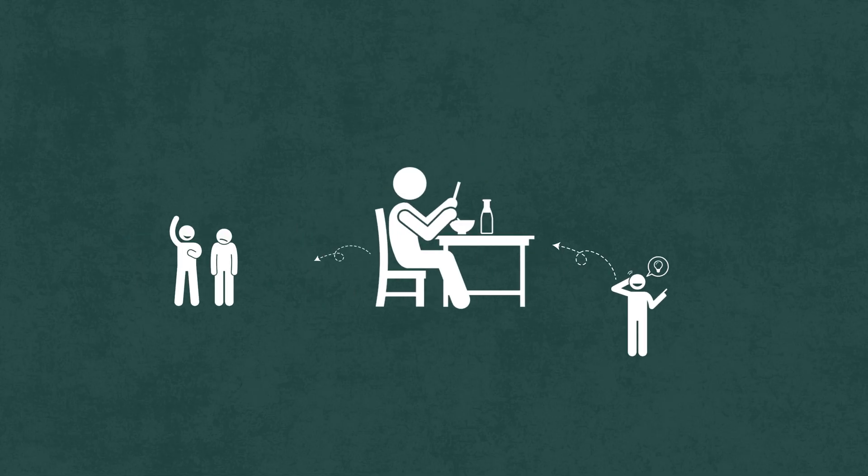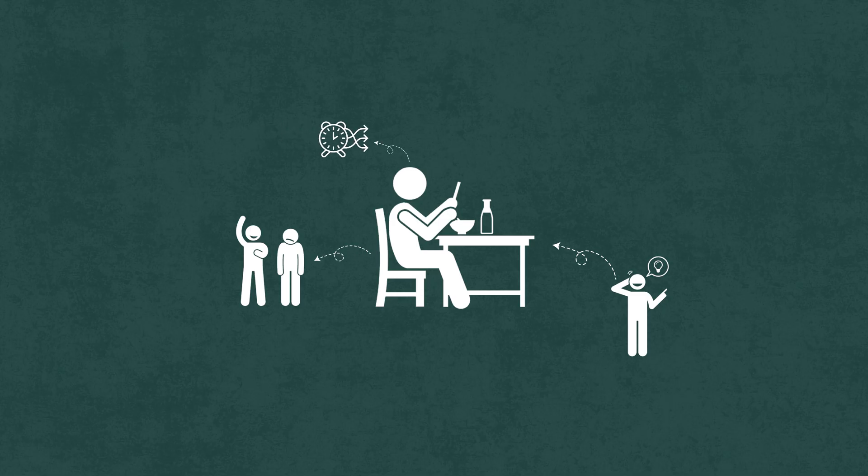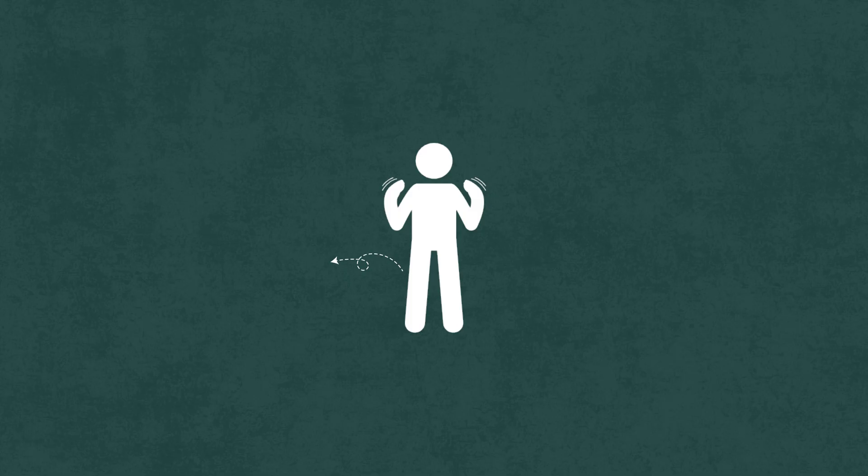Most people don't realize this, but your very first meal of the day decides how sharp or how foggy your brain will be for the next several hours. Breakfast isn't just food, it's the chemical signal you send to your brain about how it should operate.